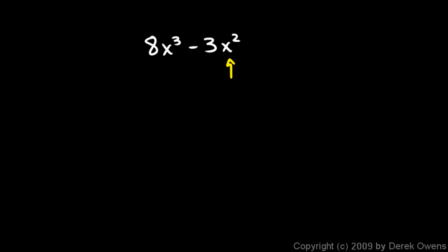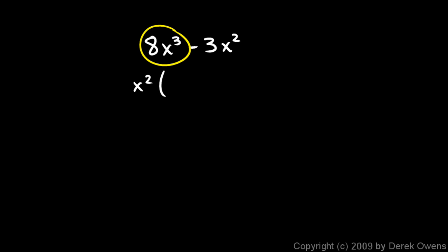So I'm going to factor out the x squared. I ask myself: if I take an x squared out of this — meaning if I divide this term by x squared — what's left? Another way of asking the same question is: what do I need to multiply x squared by to give me that? Well, x squared multiplied by 8x would give me 8x cubed, so that's the first part of my other factor, and then I have my minus sign.